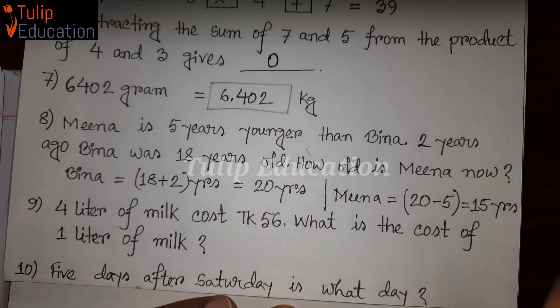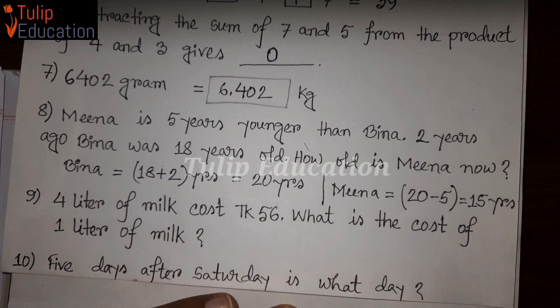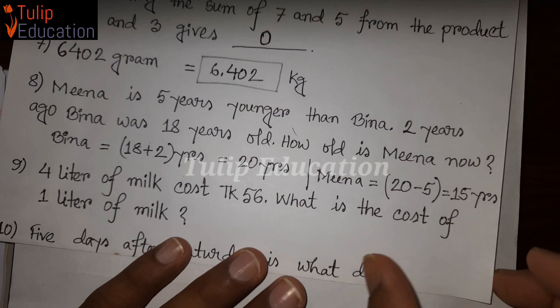15 plus 3 is equal to 18. So that is 18 years. We have done this relationship.